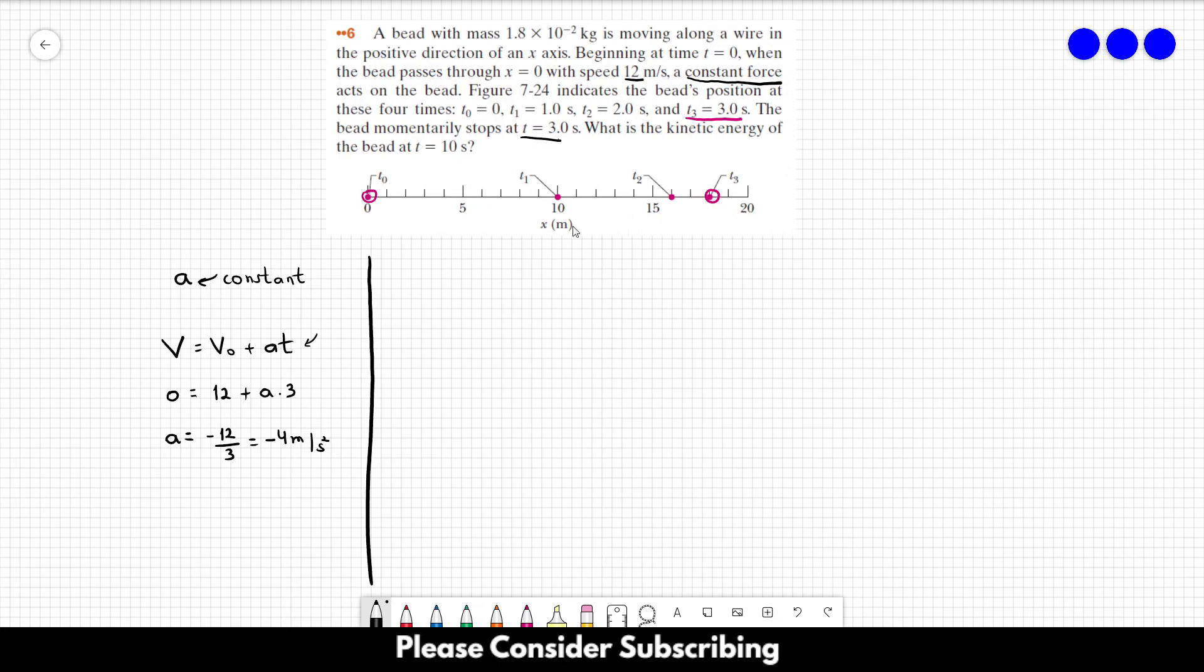So, we are going to find the speed when the clock shows us 10 seconds. Let's use the same equation again: v equals v0 plus at.